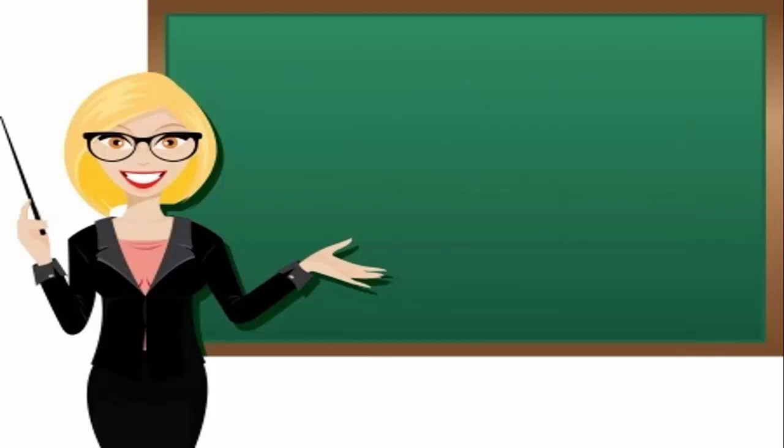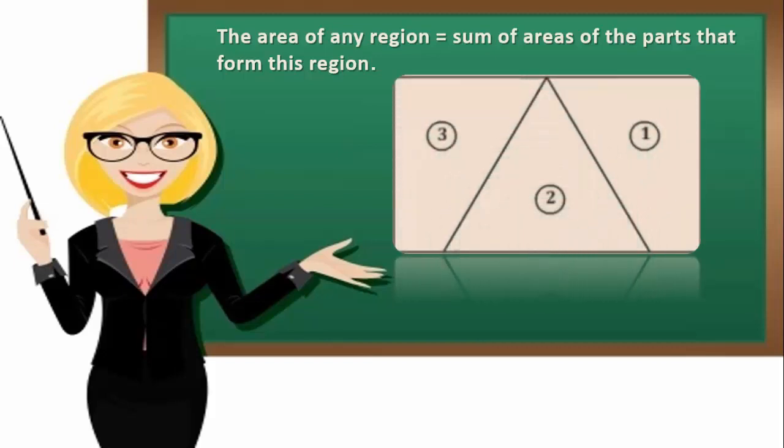The area of any region equals sum of areas of the parts that form this region. The area of the figure equals area 1 plus area 2 plus area 3.